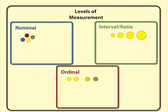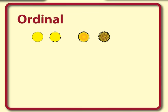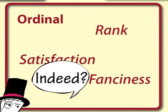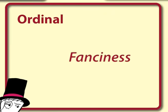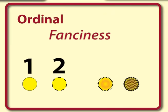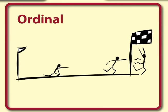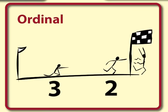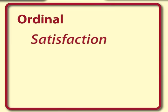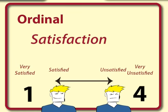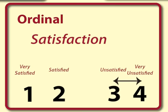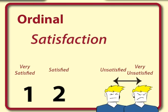The next level of measurement is ordinal. Examples of ordinal variables are rank, satisfaction, and fanciness. Ordinal variables have a meaningful order, but the intervals between the values in the scale may not be equal. For example, the gap between first and second runners in a race may be small, whereas there is a bigger gap between second and third. Similarly, there may be a big difference between satisfied and unsatisfied, but a smaller difference between unsatisfied and very unsatisfied.